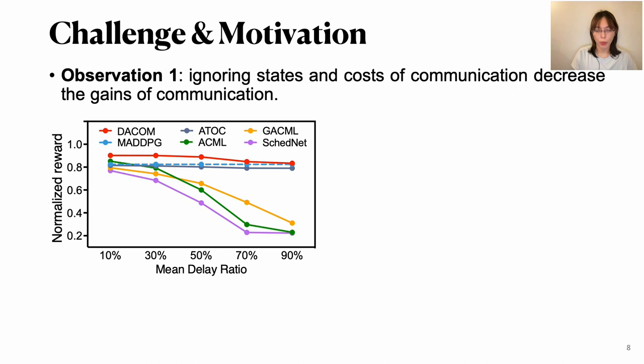To figure out whether these two missing points matter for agents' cooperation or not, we do some analysis. From observation, we find that ignoring states and cost of communication decreased gains. Here's the results. The blue dashed one is learning without cooperation or communication. The others are cooperation with communication but ignoring network states and overheads. We can see that from delay increasing, their performance greatly drops and even becomes worse than non-cooperation cases.